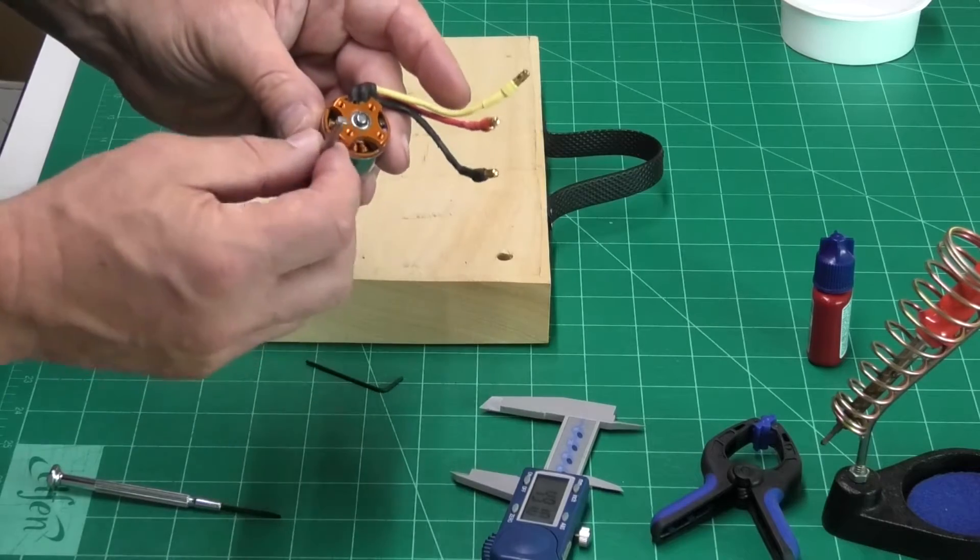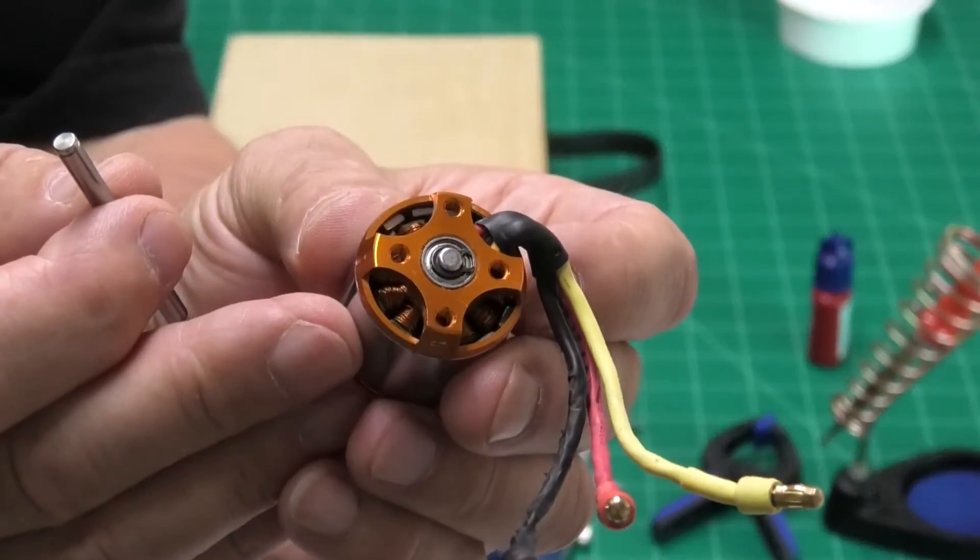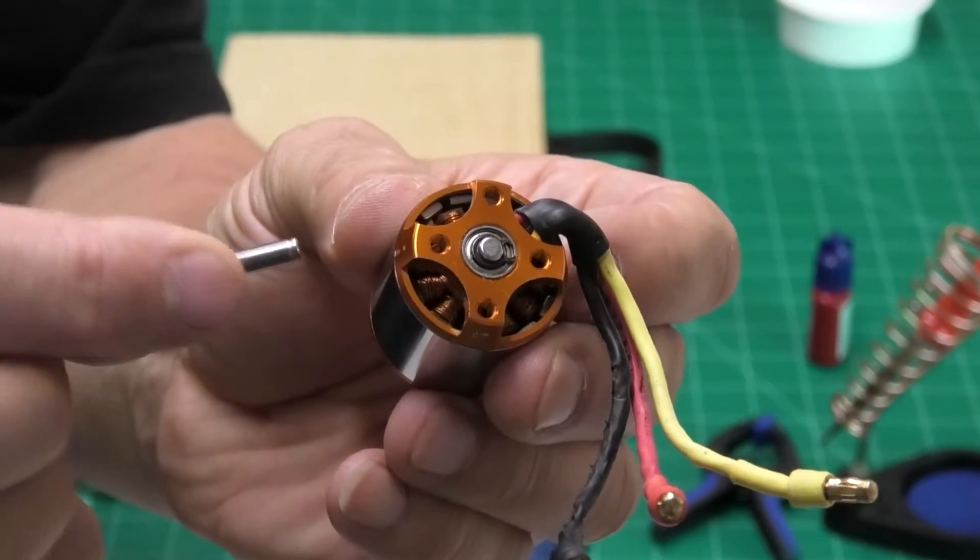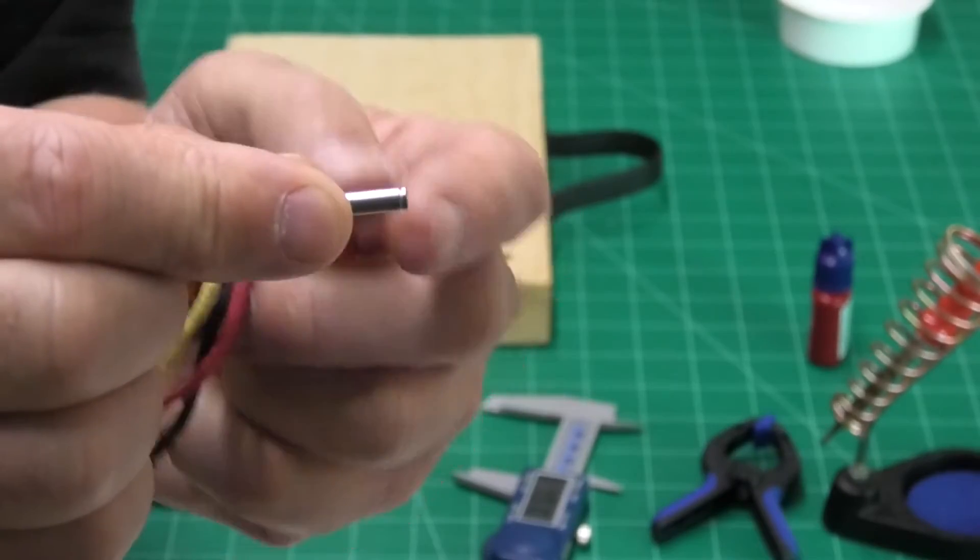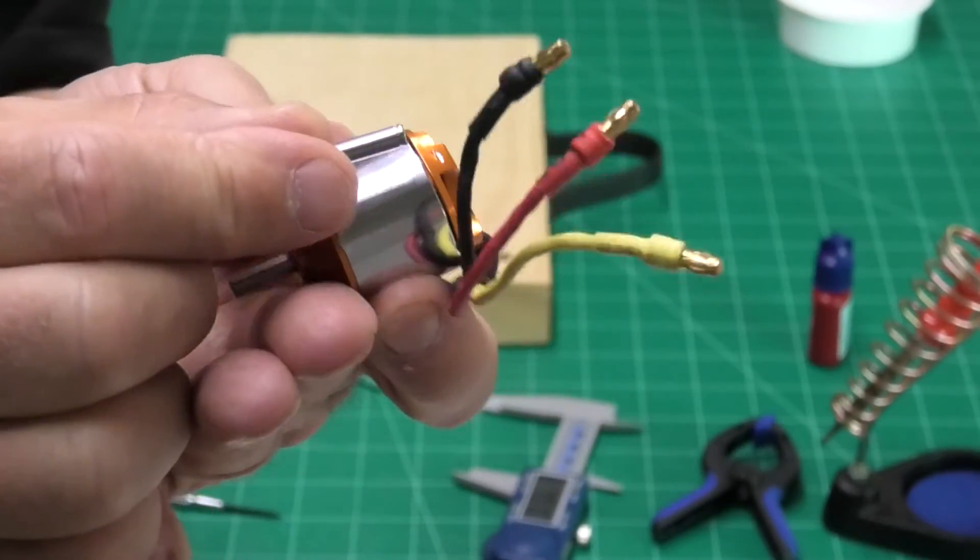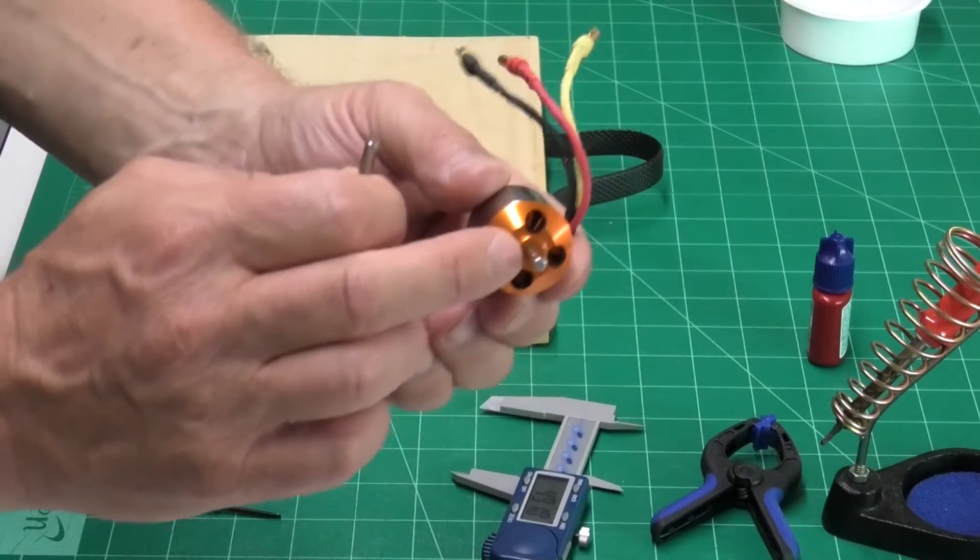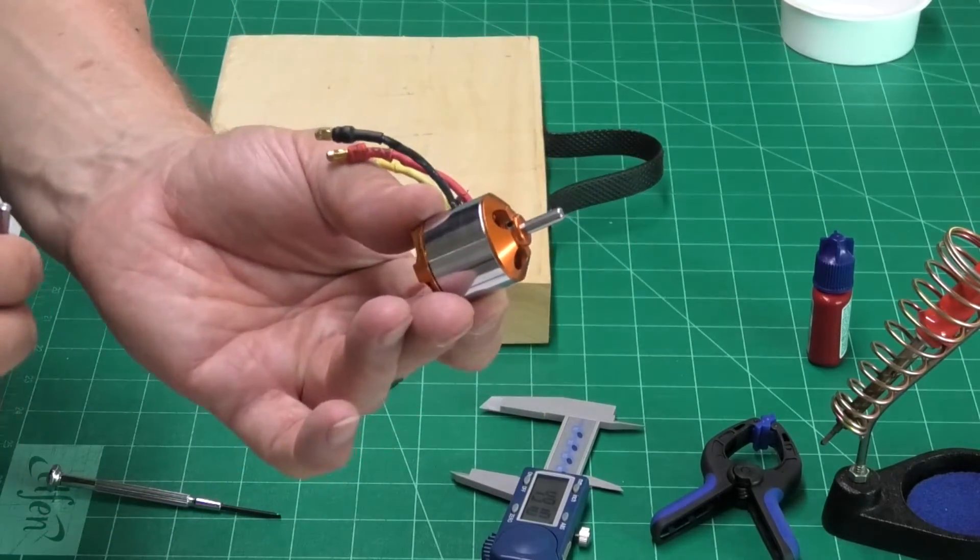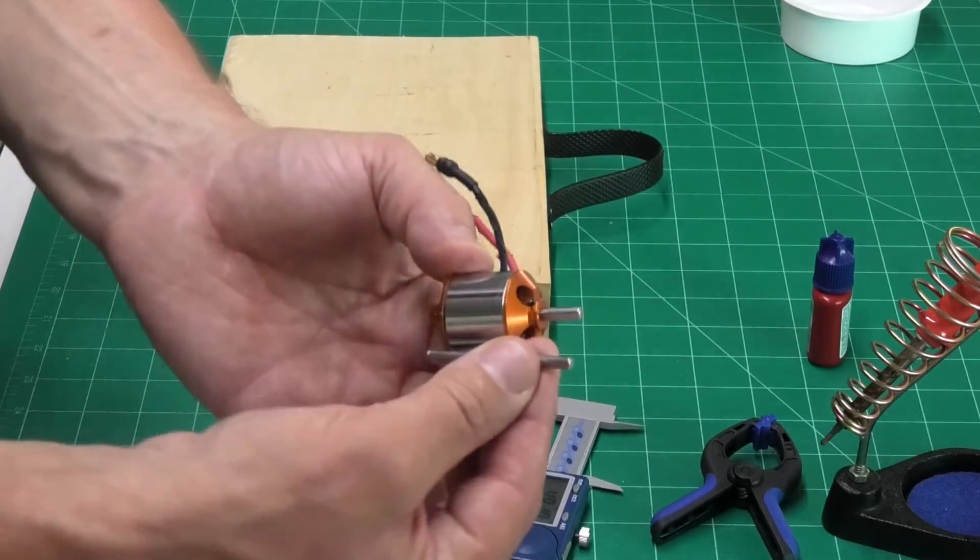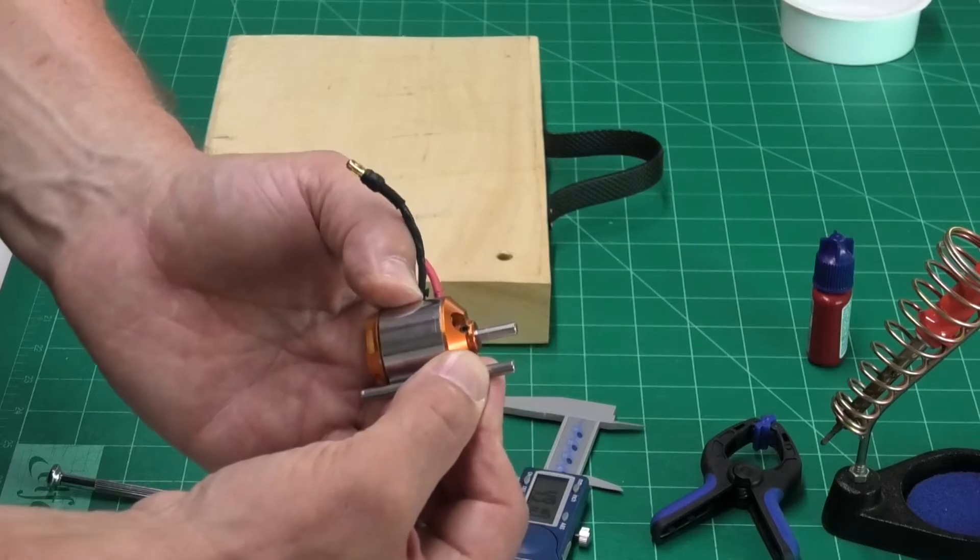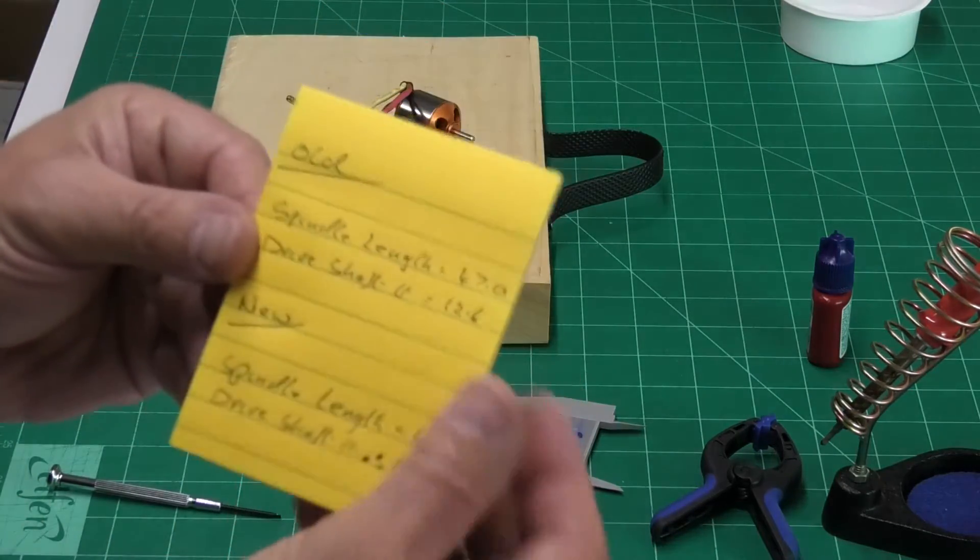The spindle is held into the motor by a circlip on the back and it's just retained in this little groove here. Well, the groove is in the same relative position on the spindle. So we just need to make sure that the end of the spindle is sticking out of the motor just a couple more millimeters to make that circlip position the same at the back.